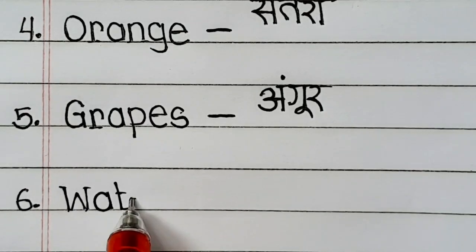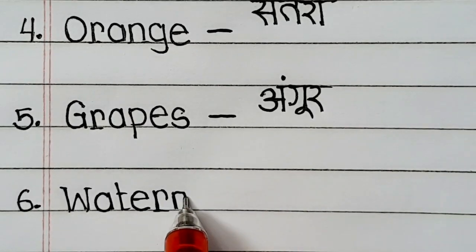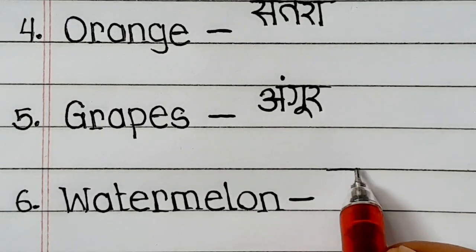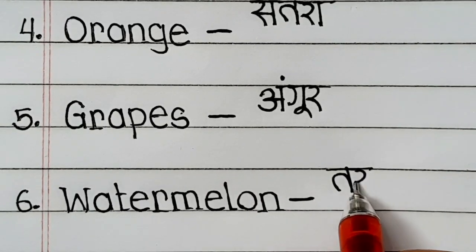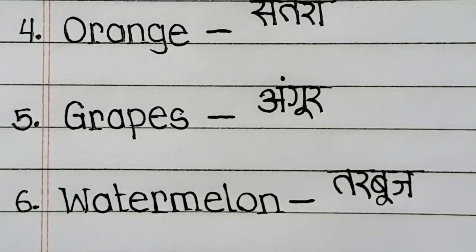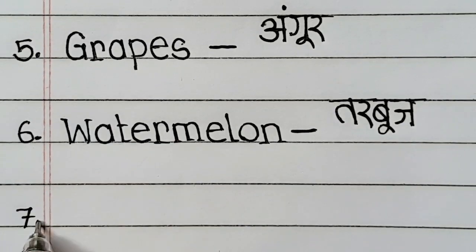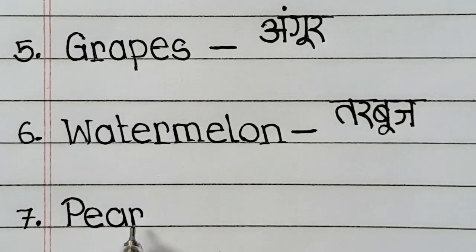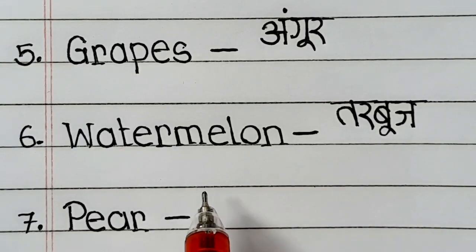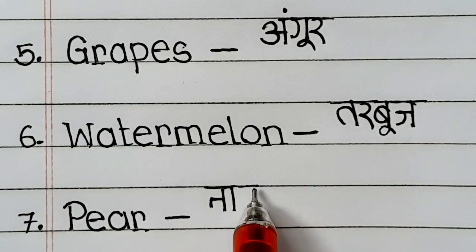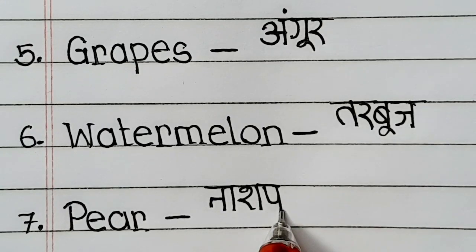W-A-T-E-R-M-E-L-O-N, watermelon means tarbuj. P-E-A-R, pear means nashpati.